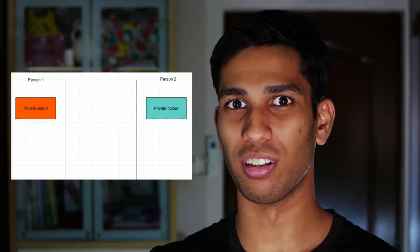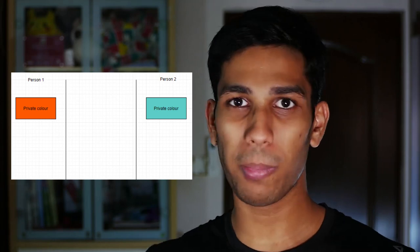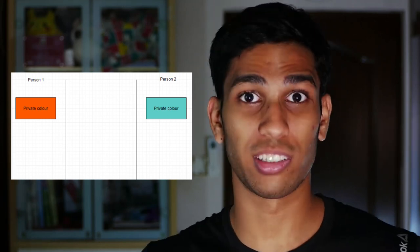So let's talk about how that works using an example of paint. I'm going to explain the process using paint colors. Firstly, for encryption to work, the two people have to select a private color. I'll tell the other person: select your own private color, don't tell anyone about it, and keep it to yourself. The public doesn't know, and I don't know the other person's private color either. Here's an example of a flowchart with the two private colors selected.